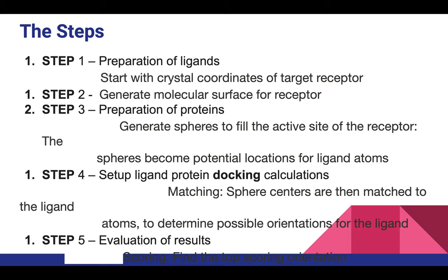There are five steps to protein docking. Step one is the preparation of the ligand — or another protein if working with protein-protein docking. Start with the crystal coordinates of the target receptor and determine where it should bind. Step two is generating the molecular surface for the receptor, ensuring the binding site is identified. If no information is available, you can use a default site.